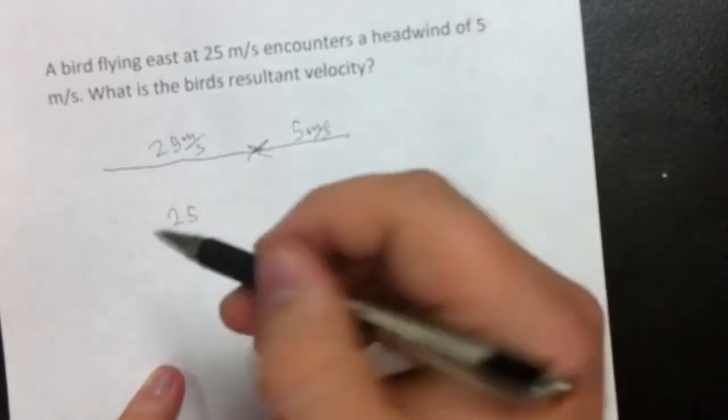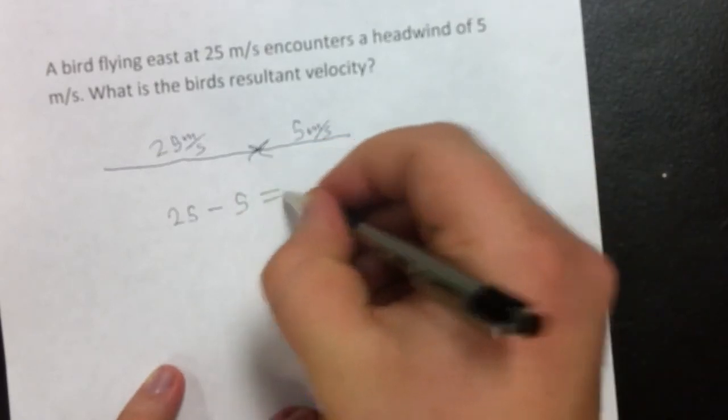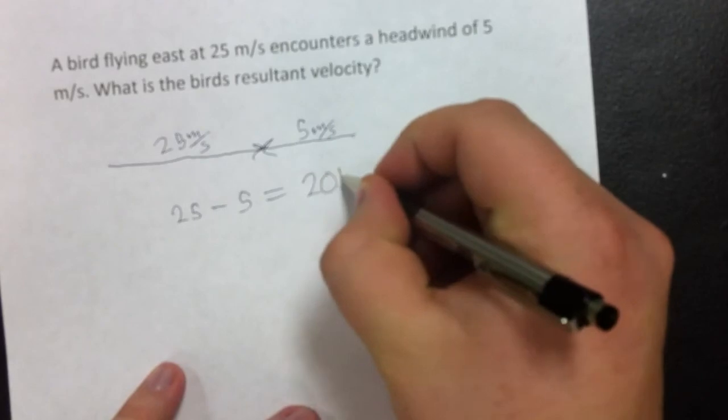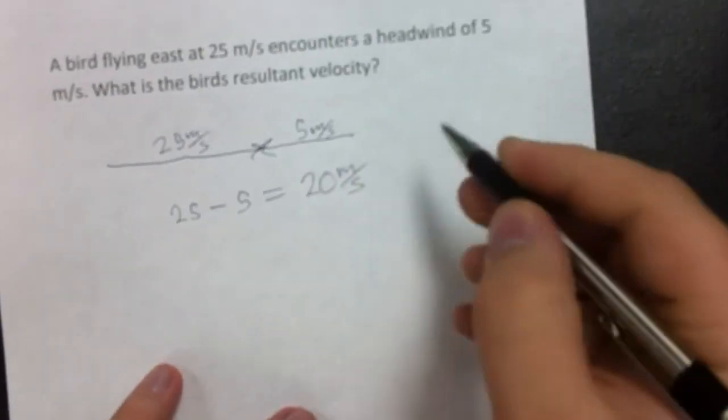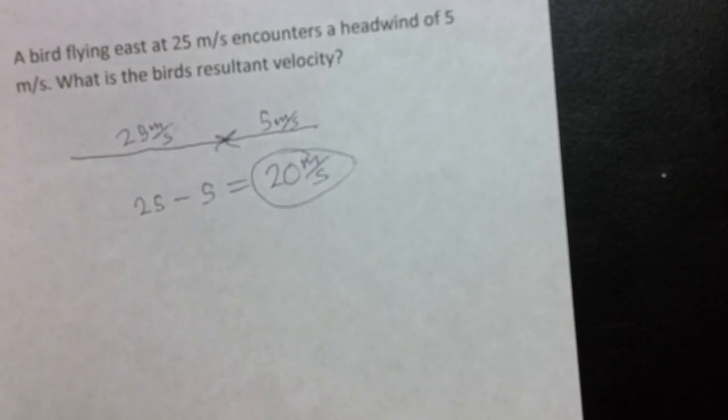This vector is acting in the opposite direction, so we're going to subtract it. And that gives us our resultant velocity, which is 20 meters per second. Okay, and that concludes this problem.